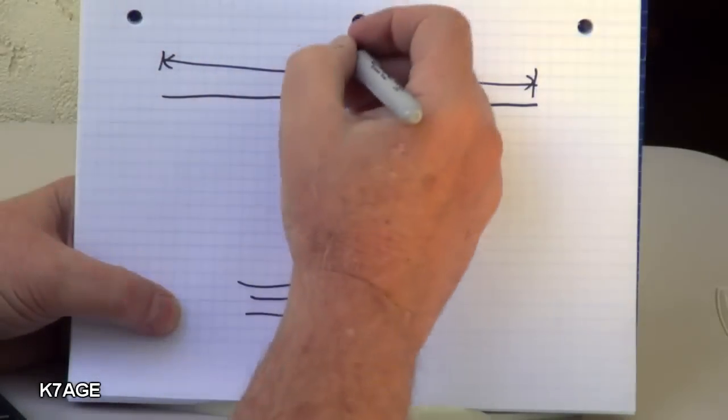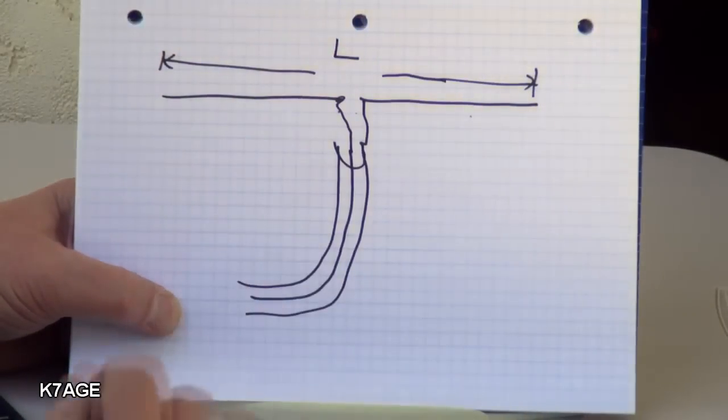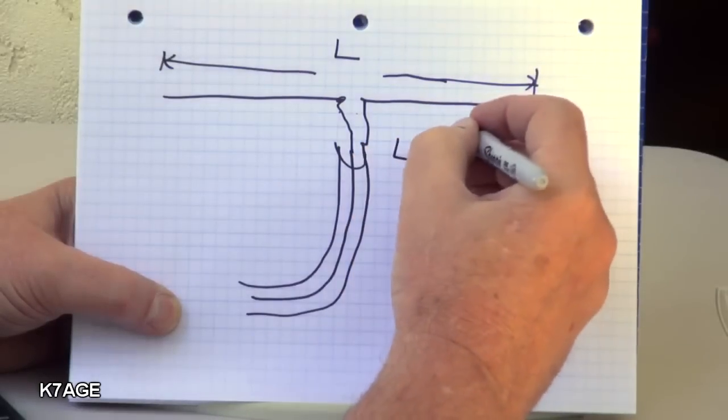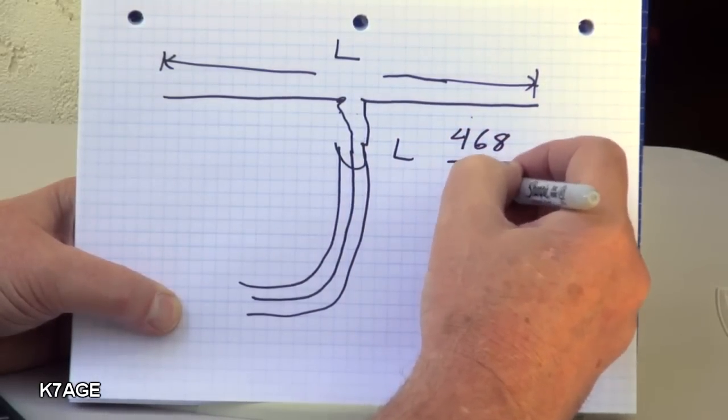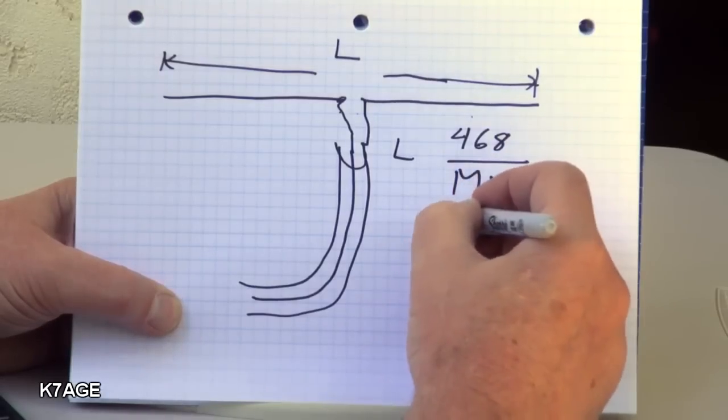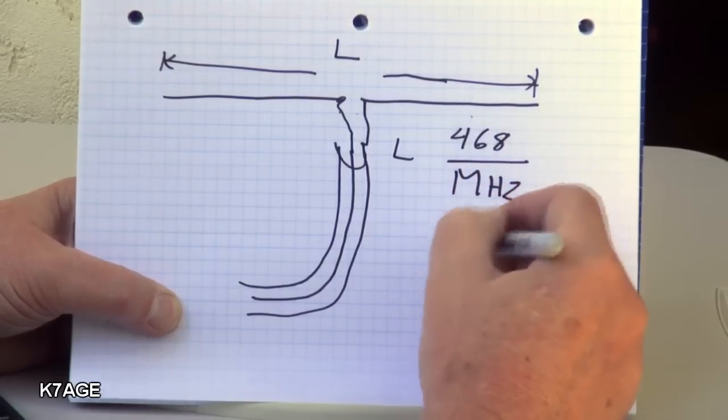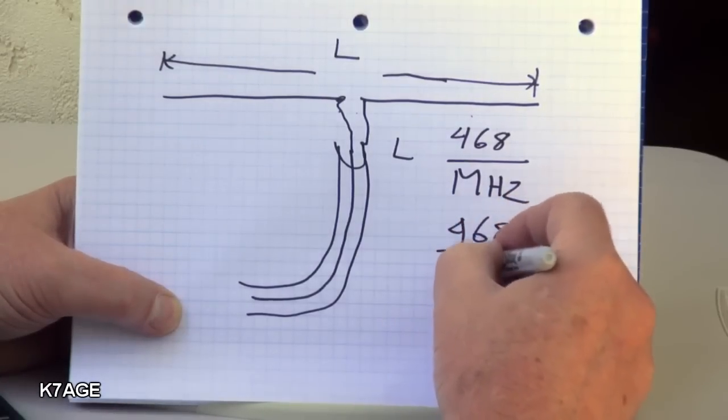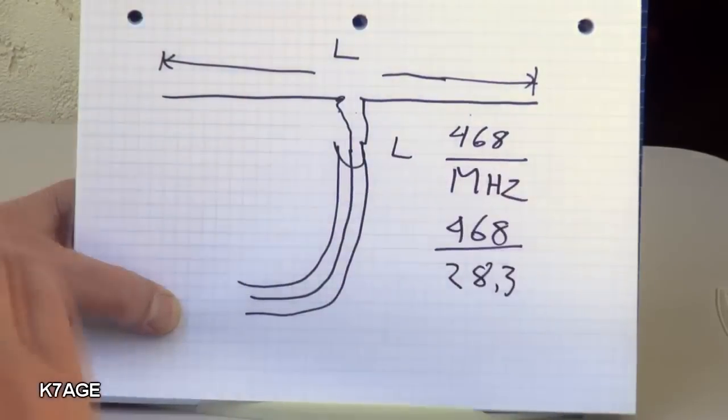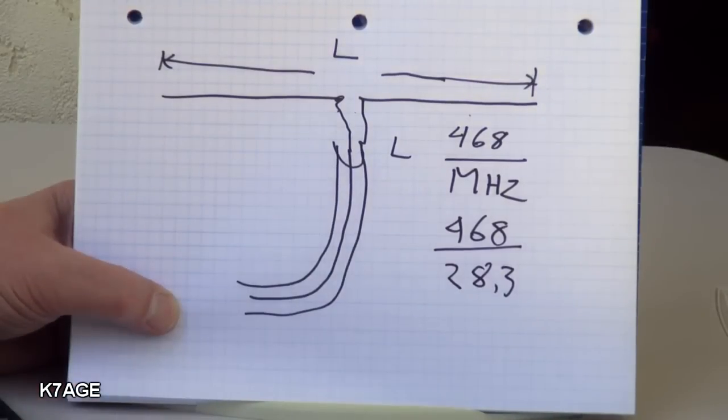So this length is equal to 468 divided by your frequency in megahertz. So we're going to have 468 and I'm going to cut the antenna to 28.3, just at the boundary between the data and the voice.